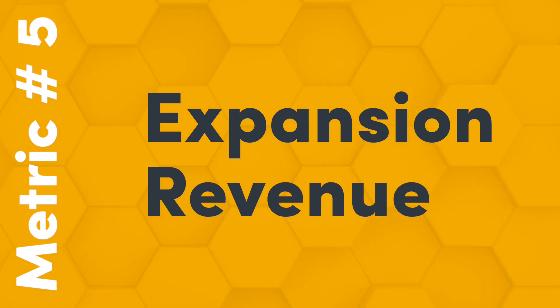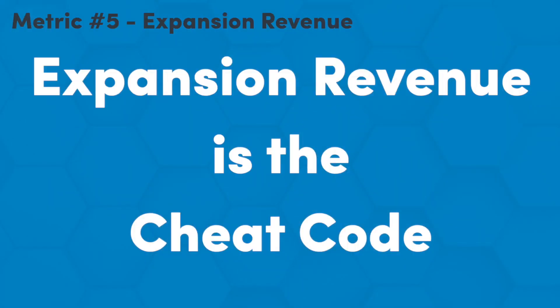Expansion revenue is the fifth KPI and the one we want high. Every business wants subscription revenue because it is the business cheat code — and we get that for free with SaaS. In SaaS, expansion revenue is the cheat code. As customers get more value from your product, they automatically pop up into a higher tier and pay you more. You can achieve this with a value metric, with feature gating, or both. The goal is to charge more to the right customers — different segments willing to pay more — by figuring out the right value metric or feature gate.